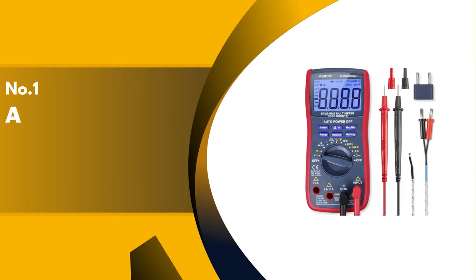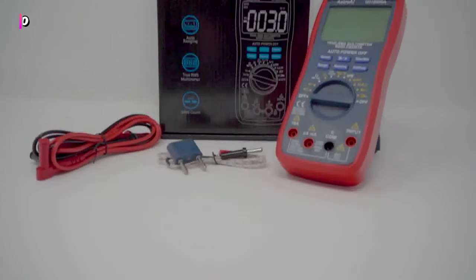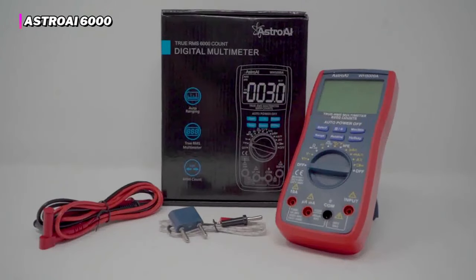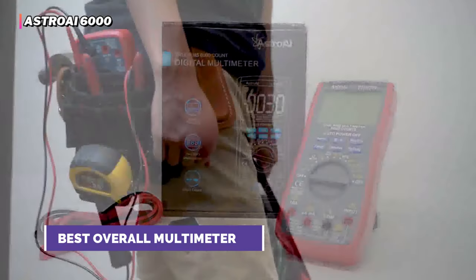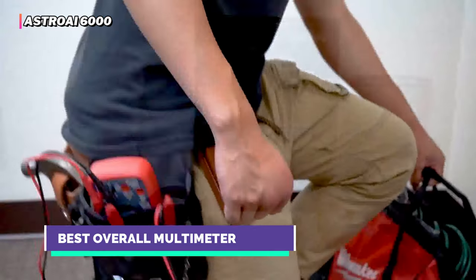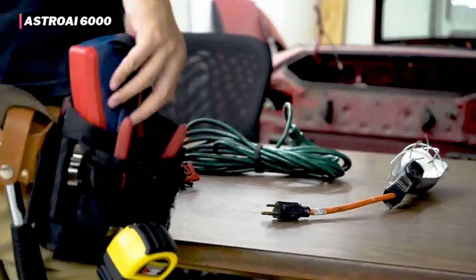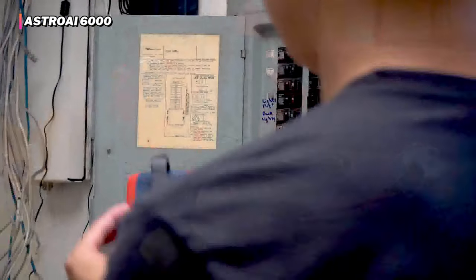Finally, our top product title name is the Astro AI 6000. The Astro AI 6000 earns its spot as our all-around favorite multimeter. Compared to other premium products, this model combines an impressive set of AC and DC measurement capabilities in a convenient and affordable package.